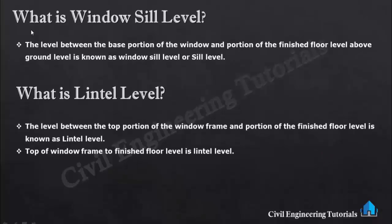First of all, what is windowsill level? The level between the base portion of the window and the finished floor level above ground level is known as windowsill level, or it is also known as sill level. Now what is finished floor level? Finished floor level means this is the last stage of flooring — up to this level, no flooring work is done. So this is finished floor level.